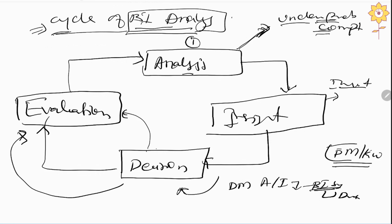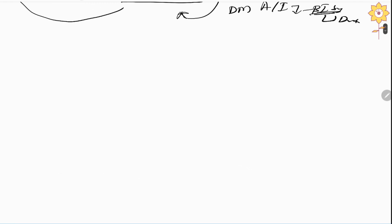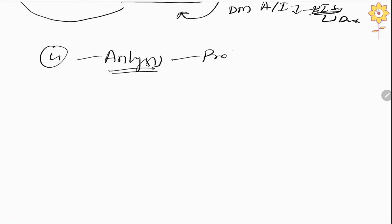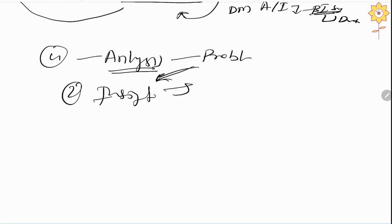To quickly revise — there are four things in the cycle of BI analysis. First is the analysis phase, where we analyze the problems faced by the company. Then comes the insight phase, where we try to figure out and understand the problem in a deeper manner, in which cross questioning is done by managers or the owner of the business to understand the problem more properly.